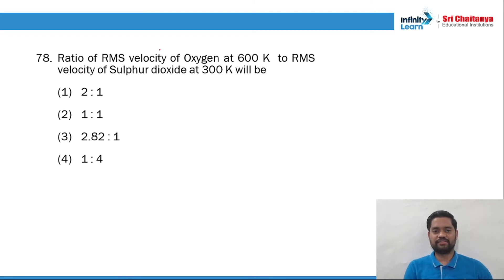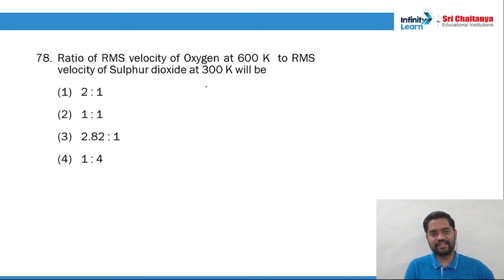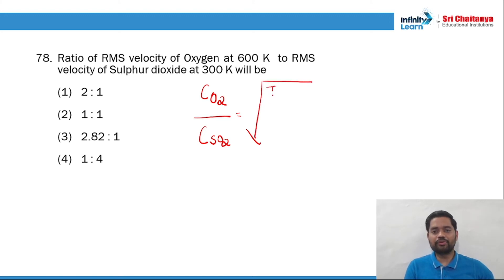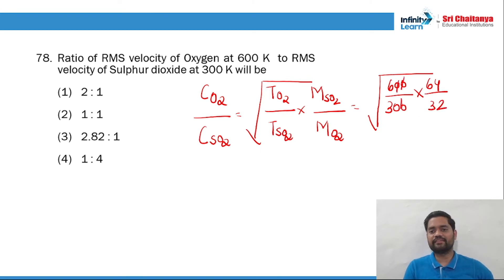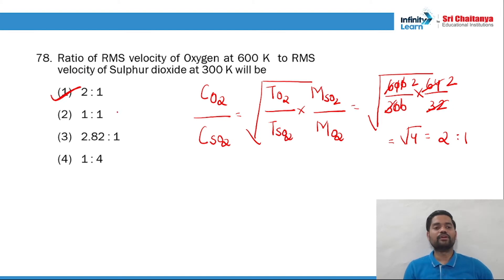Question 77: the ratio of RMS velocity of oxygen to RMS velocity of sulfur dioxide. RMS velocity is √(RT/M). So C(O2)/C(SO2) = √[(T_O2 / T_SO2) × (M_SO2 / M_O2)]. Temperature of oxygen is 600 K, SO2 is 300 K, M_SO2 = 64, M_O2 = 32. This equals √[(600/300) × (64/32)] = √[2 × 2] = √4 = 2. Hence the ratio is 2:1. Option 1 is the right answer.